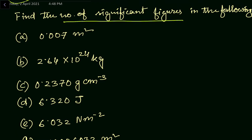In the first part of this problem we are given a magnitude. You have to discard the unit part — for all cases given here, ignore the units and look only at the magnitude. This value is less than one, it is zero point something. When a value is less than one, all the zeros on the left-hand side of the first non-zero digit are not significant. So these three zeros are not significant, and we have only one significant figure. Significant figures equals one.